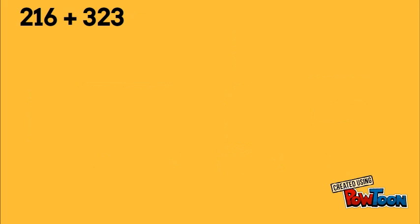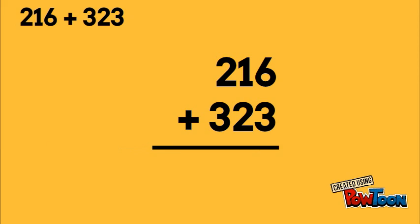Alright, let's show the written method now. So we have 216. We make sure we line up 323 directly underneath it by place value. And we add vertically. 6 plus 3 is 9, 1 plus 2 is 3, 2 plus 3 is 5. Gives us our same answer, 539.